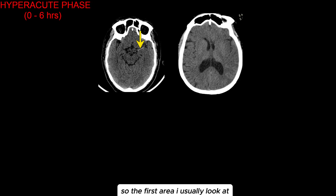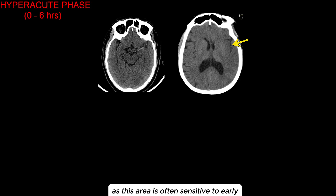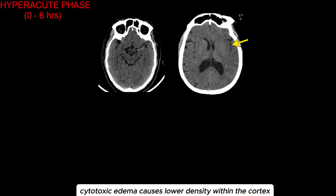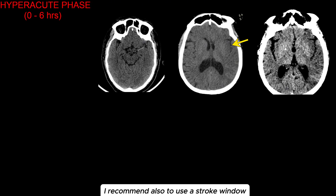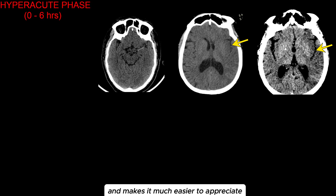The first area I usually look at is the sylvian fissure, as this area is often sensitive to early ischemic changes in MCA infarct. Cytotoxic edema causes lower density within the cortex, so the differentiation between the cortex and underlying white matter is no longer apparent. I recommend also using a stroke window, which may exaggerate this difference and makes it much easier to appreciate these ischemic changes.